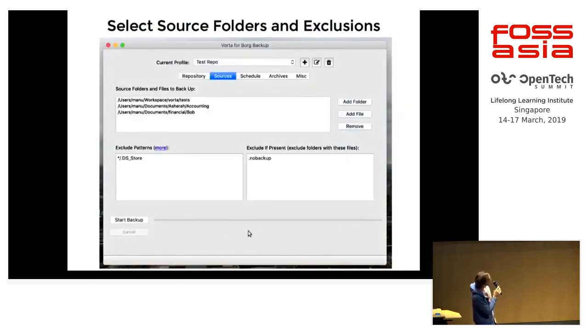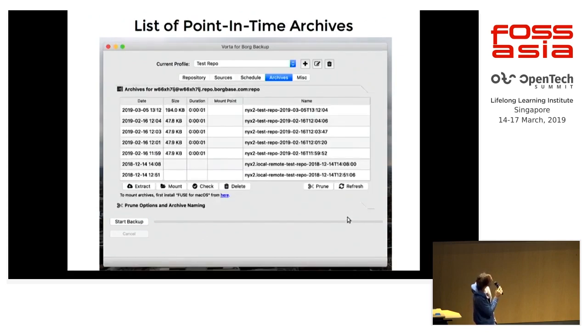You can choose the folders you want to backup and you can have some exclusions. This is an overview of all the backups you have, like the point-in-time archives.